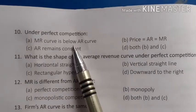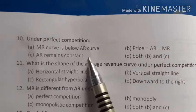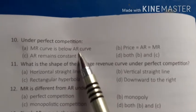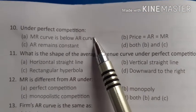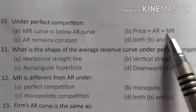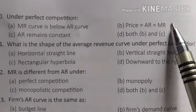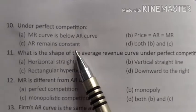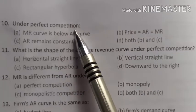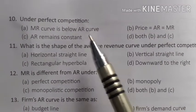Under perfect competition: A) MR curve is below AR curve, B) price equals AR equals MR, C) AR remains constant, D) both B and C. Options A describes monopoly, not perfect competition. In perfect competition, price equals AR equals MR and AR remains constant, so D — both B and C — is correct.